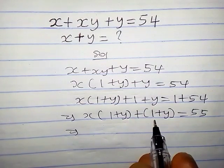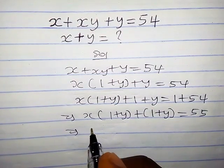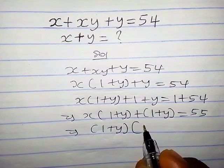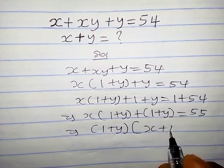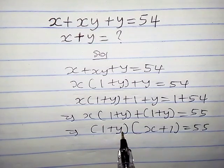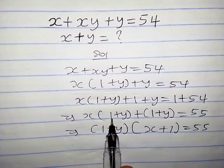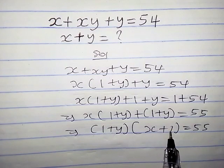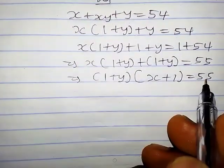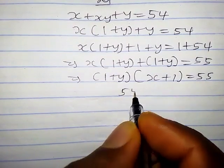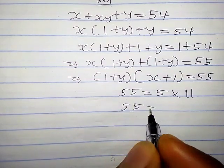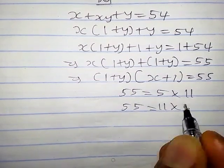You will observe that 1 plus y is common, so let us factor it out. So we have 1 plus y, into x plus 1, equals 55. Now 55 can be written as 5 times 11, or as 11 times 5.